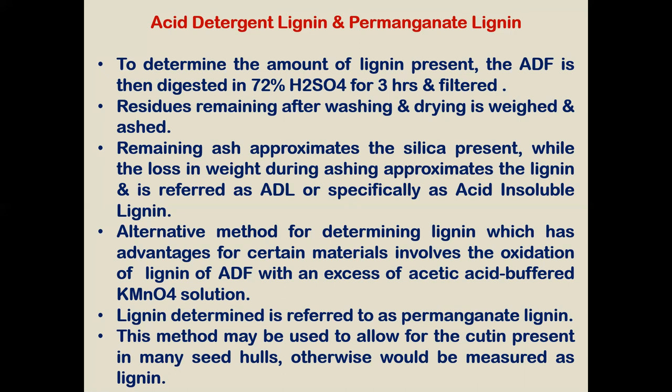One alternative method for determining lignin, which has an advantage for certain materials, involves the oxidation of lignin in acid detergent fiber with an excess of acetic acid buffer potassium permanganate solution. Lignin determined by this method is referred to as permanganate lignin. This method may be used to allow for cutene, which is present mainly in seed hulls and which would otherwise be measured as lignin.